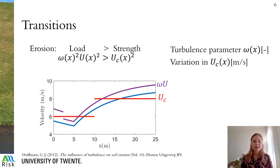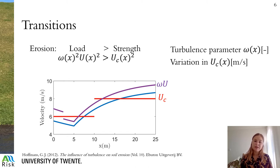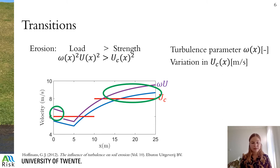In the case of transitions, we need to extend this model. The load is not only determined by the flow velocity, but also by a turbulence parameter omega, which we use to simulate the additional load at transitions. An example is shown in purple, where we increase the turbulence parameter at the beginning of the domain because of a transition, making the load determined by the purple line. We can also take variations in the critical flow velocity into account, shown in red. In this case, we get erosion in the green area, just at the beginning and at the end of the profile.